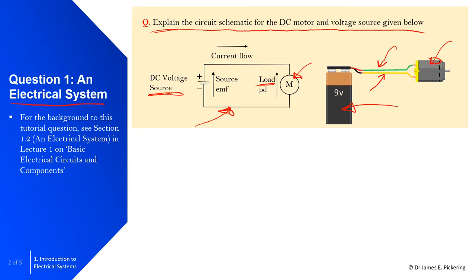What's going on here is effectively you've got a current flowing through the circuit. This current is effectively the rate of the flow of charge.